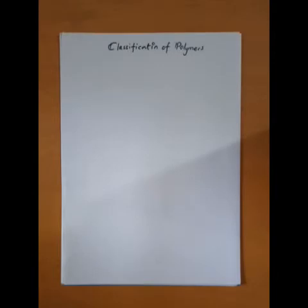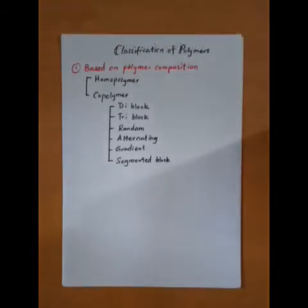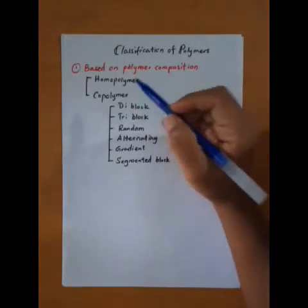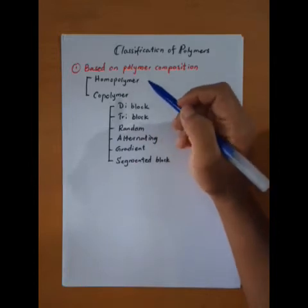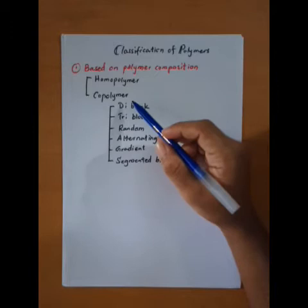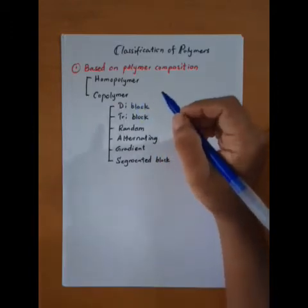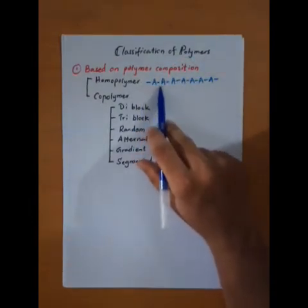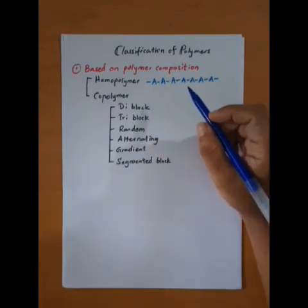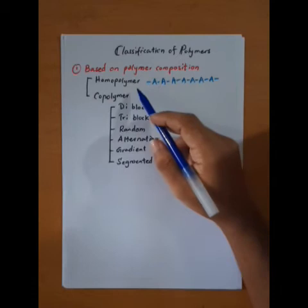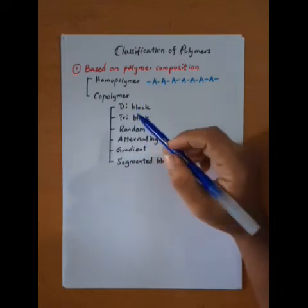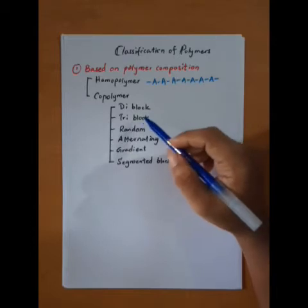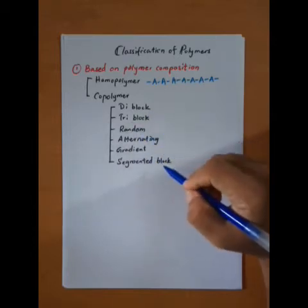Polymers can be classified in several ways based upon their various properties. The first classification is based on composition. We have homopolymers and copolymers. Homopolymers consist of only one type of monomer, while copolymers consist of two or more monomers. Polyethylene and polyvinyl chloride are good examples of homopolymers. Copolymers can be further divided into diblock, triblock, random, alternating, gradient, and segmented block types.